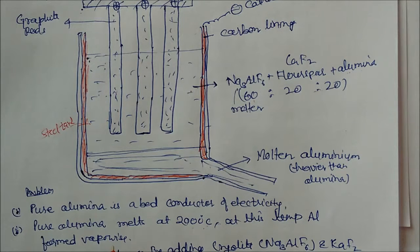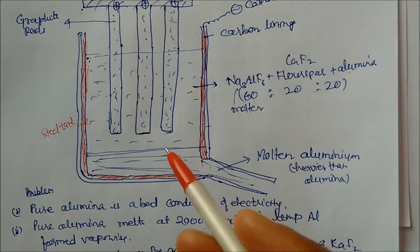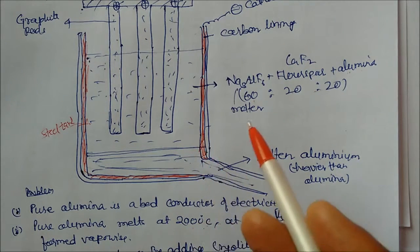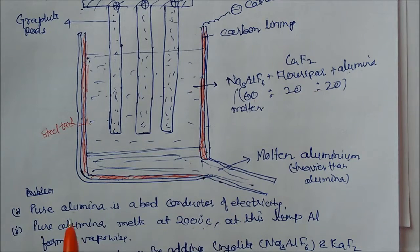At this temperature, aluminium will form vapour. So we won't get aluminium in a molten state. It will convert into vapour. To condense the metal from vapour state is very difficult task. So that is not a feasible method to increase the temperature.